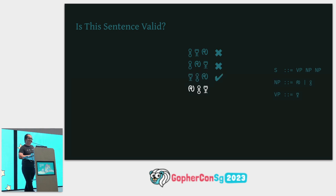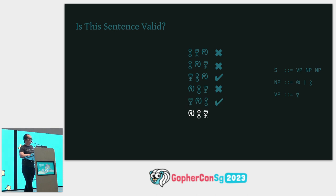Is this sentence valid? No. Is this sentence valid? Yes. It is valid because it starts with a verb. Is this sentence valid? No.